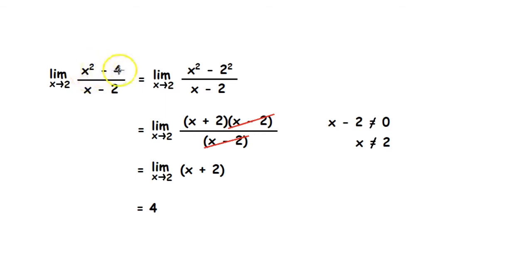We will get 2² - 4 divided by 2 - 2. This will give us 0 divided by 0. Since this is not an answer we want, we can try evaluating it even more. The numerator here is in the form a² - b².